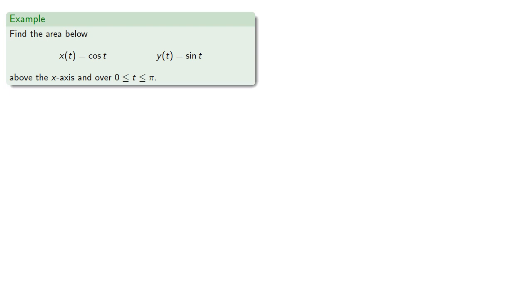So suppose we want to find the area below x equals cosine t, y equals sine of t, above the x-axis and over the interval between zero and pi.